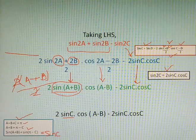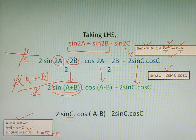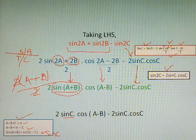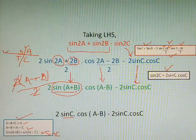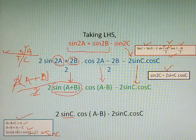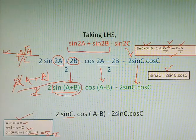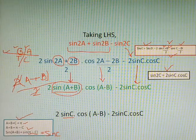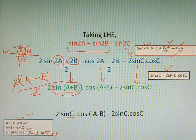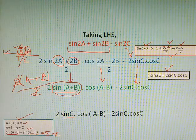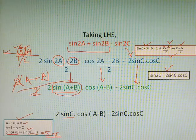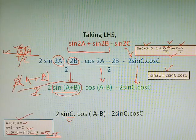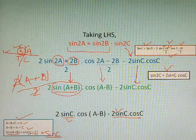To write sinC, we need to know one more thing: that is the CAST rule. If you remember the CAST rule, whenever the angle lies between 90 degrees and 180 degrees, as we can see here 180 degrees minus C, that means the angle lies in the second quadrant. Here, following the CAST rule, sine will be positive. That's why we can write sin(A+B) as sinC. So we have written sinC here, and in the second part also we can see 2sinC.